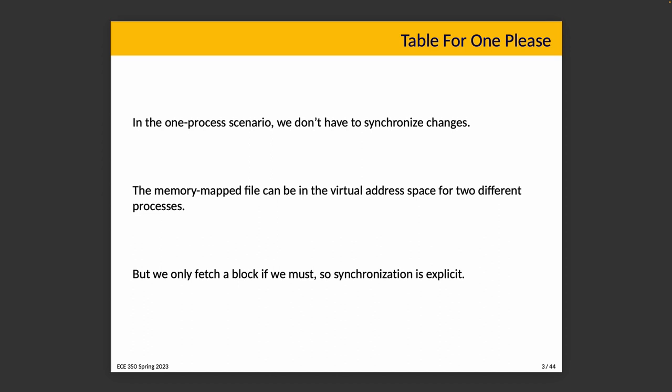The real purpose we discussed earlier was interprocess communication. In that case, the virtual memory is mapped to two different processes — the memory-mapped file appears in both. That is a perfectly good solution, but part of the reason we needed to explicitly call synchronization using the ms sync routine is that memory reads and writes are fine, but disk reads and writes are on demand. We only fetch a block if it was used, to ensure everybody gets the same version of the data.